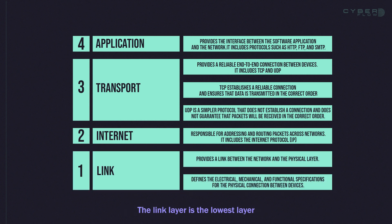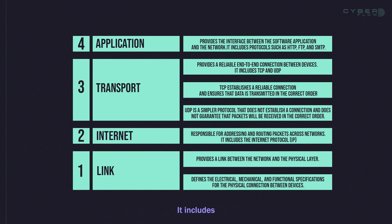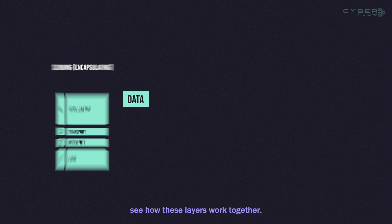The link layer is the lowest layer and is responsible for physical communication between devices on the same network. It includes protocols such as Ethernet and Wi-Fi. Now let's see how these layers work together.